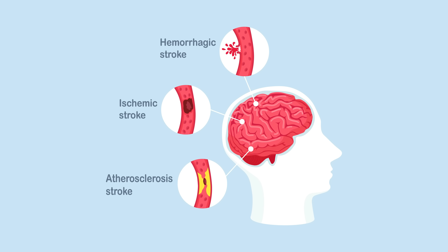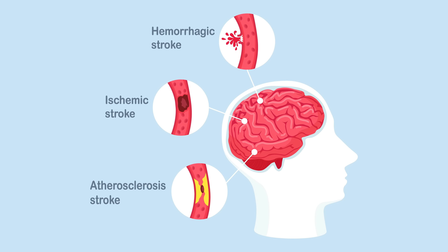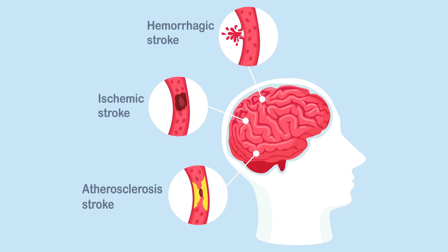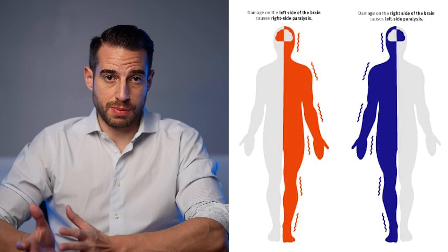The symptoms of a stroke are highly variable — it really depends on the type of stroke, the size of the stroke, and most importantly the location of the brain that is having the stroke. For example, when someone has an ischemic stroke of the middle cerebral artery, which is the most common artery involved in a stroke, let's say it happens on the left side of the brain — that's going to cause muscle weakness on the opposite side of the body.